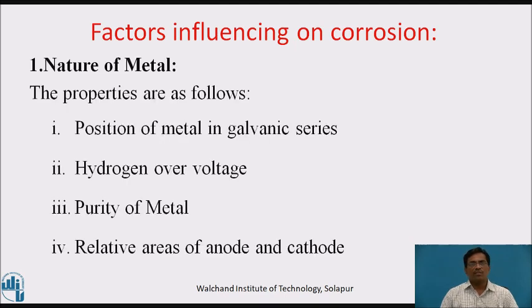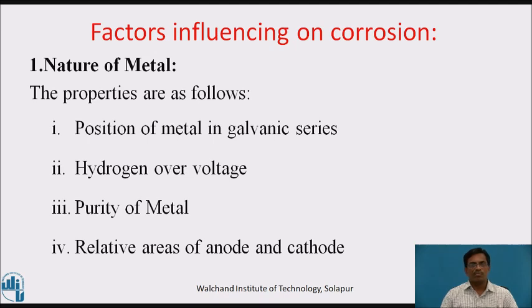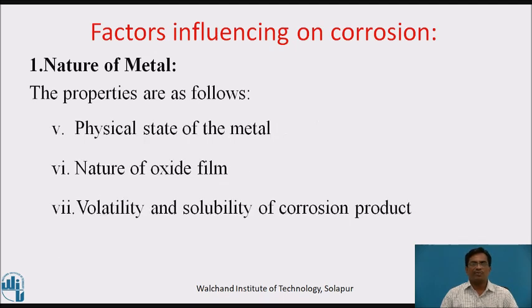Factors related to the metal include: first, position of metal in galvanic series; second, hydrogen overvoltage; third, purity of metal; fourth, relative areas of anode and cathode; fifth, physical state of metal; sixth, nature of oxide film; and seventh, volatility and solubility of a corrosion product.